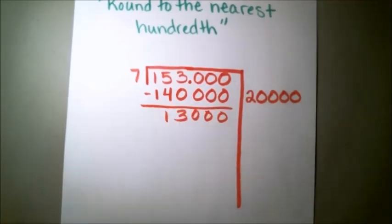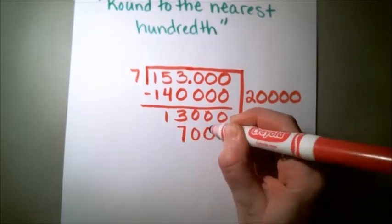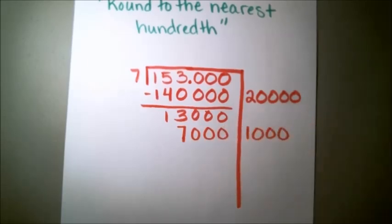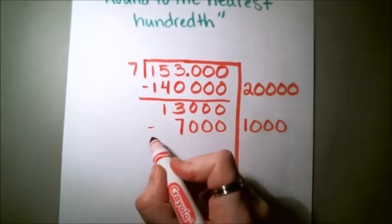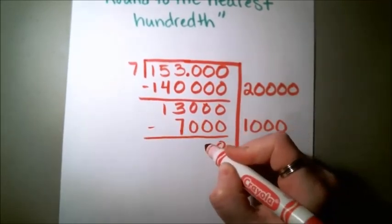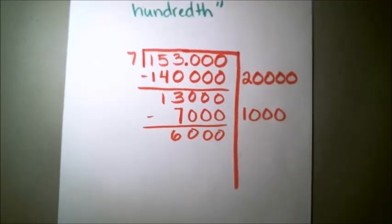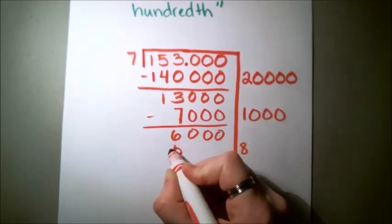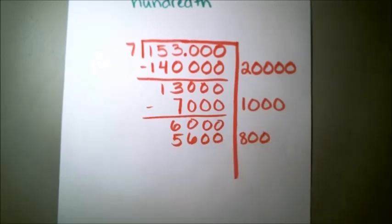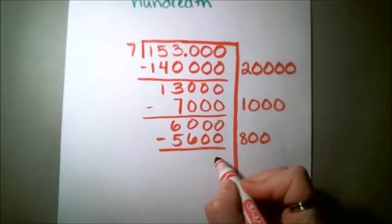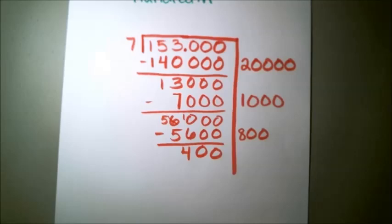So now I'm left with 13,000. I'm just going to take out another 1,000 7's. I'm always recording how many of those 7's I'm taking out on this right-hand side. And when we subtract, we get down to 6,000. Well, I know that 7 times 8 is 56, and I've got these other 2 place values to fill in, so I really need to take out 800 7's. So I'm left with 400 there.